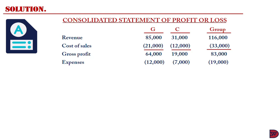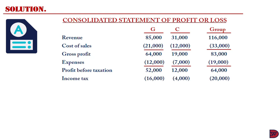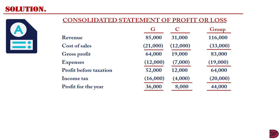Expenses are $12,000 for Gene, $7,000 for C, and $19,000 for the group. Profit before taxation is $52,000 for Gene, $12,000 for C, and $64,000 for the group. Income tax is $16,000 for Gene, $4,000 for C, and $20,000 for the group, which leads to a profit for the year of $36,000 for Gene, $8,000 for C, and $44,000 for the group.